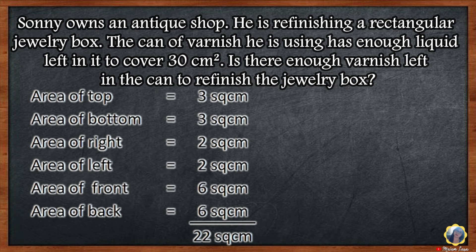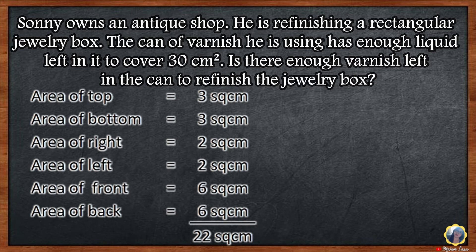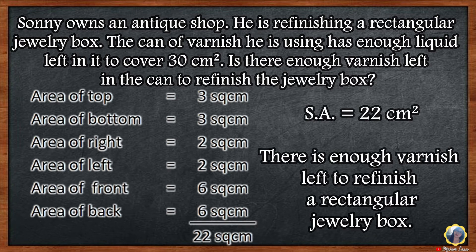Once we have all the areas of each face of the solid figure, we add them all together. Area for the top, bottom, right, left, front, and back. The total is 22 square centimeters. So the surface area for the rectangular prism is 22 square centimeters. There is enough varnish left to refinish it.